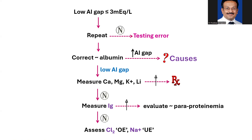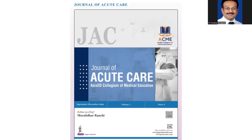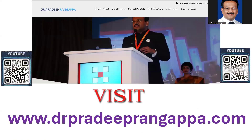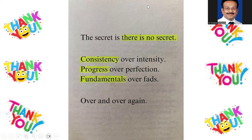I hope this video makes the causes of low anion gap very clear for all trainees. In exams we will ask you to calculate the corrected anion gap, so please remember that simple formula. Remember this algorithm and the pictorial representation of how cations and anions are distributed — it will make your conceptual understanding easy. I request all of you to submit your valuable work to the Journal of Acute Care. Thank you all.